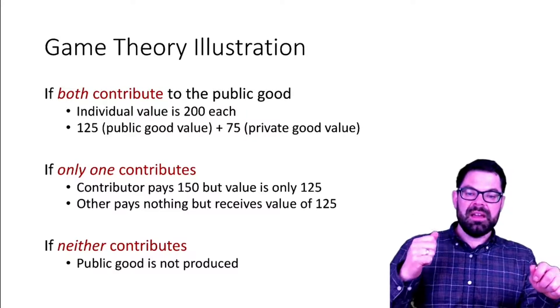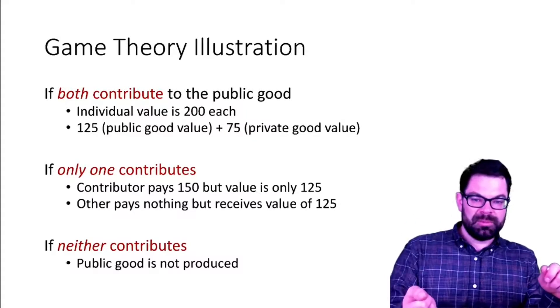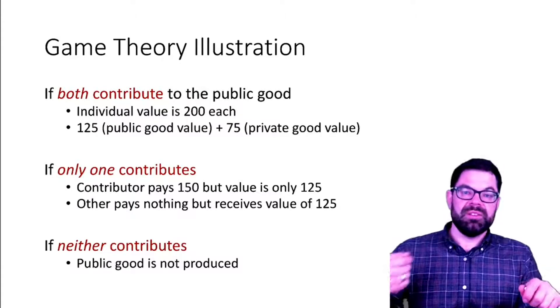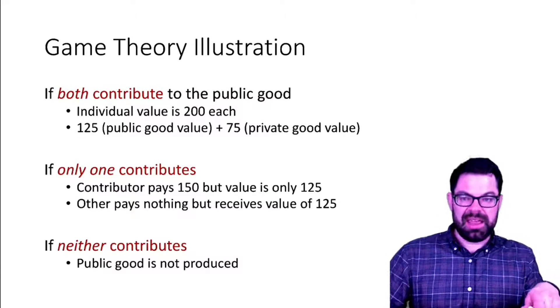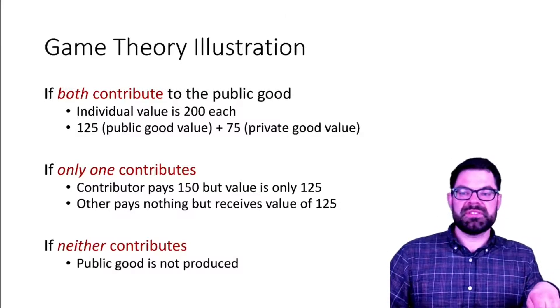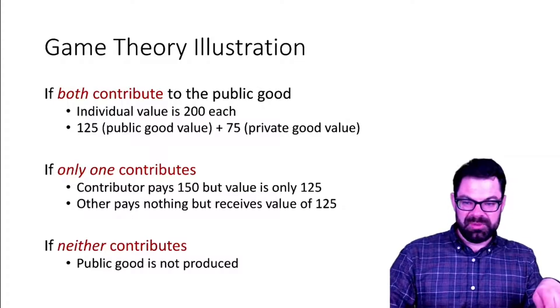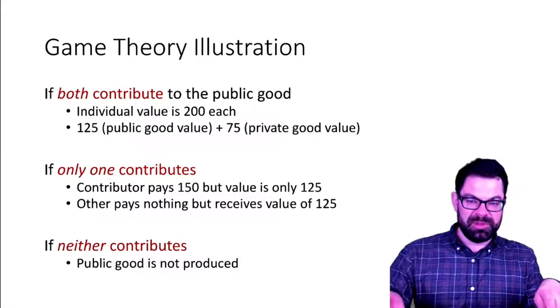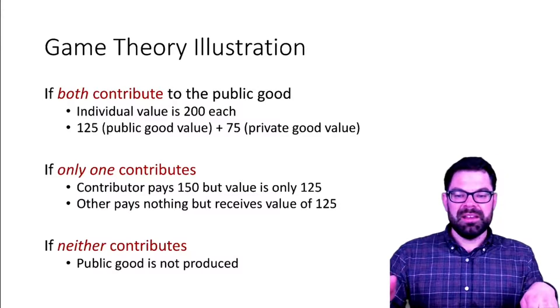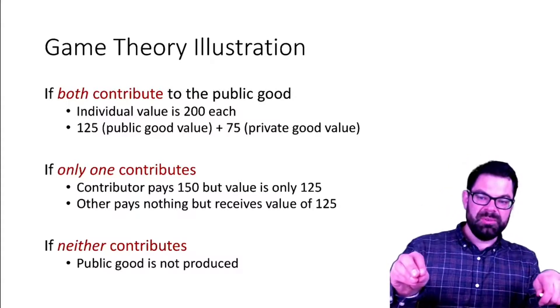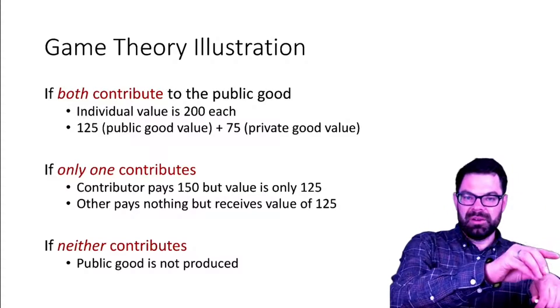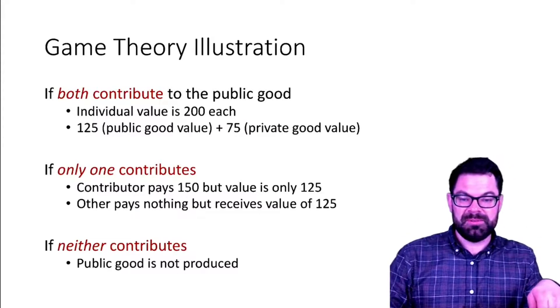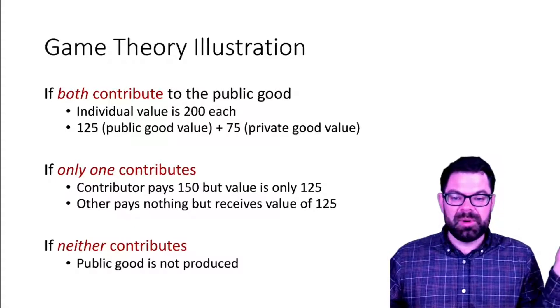If only one contributes and the other doesn't, then the contributor pays the full amount for the public good. The value they get is only 125. The idea behind this game is that they commit before they start that if at least one of us decides the public good needs to be produced, it will get produced. The contributor pays 125 and gets 125. The other party pays nothing but also receives a value of 125, so they actually make a huge profit. If neither contributes, the public good is not produced.